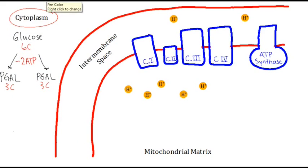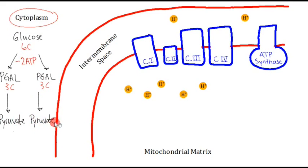From there, these two PGAL molecules are converted into two pyruvate molecules. Pyruvate molecules are a lower energy molecule, and therefore this process produces some energy. These pyruvates are still three-carbon molecules — it's just been a rearrangement from the three-carbon PGALs into the three-carbon pyruvates. Because the pyruvate is a lower energy molecule, this step actually produces ATP.